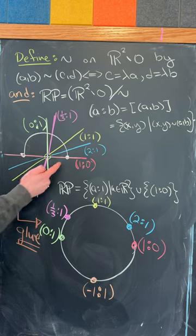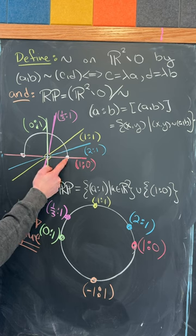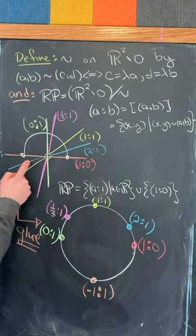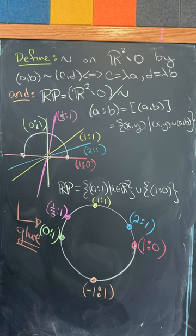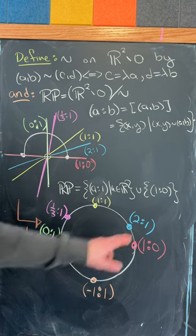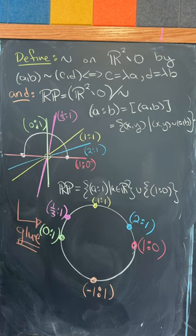But then we can just think about an arc going from here (1,0) to over here (-1,0) which are on the same line so they're the same point, and then glue that together into a circle. And so we really want to think about this as a copy of the real line along with this point at infinity that glues everything together.